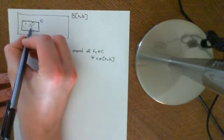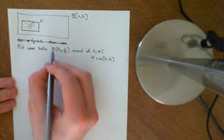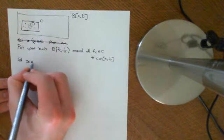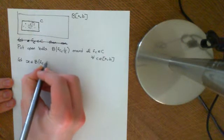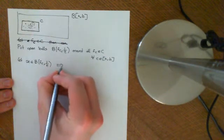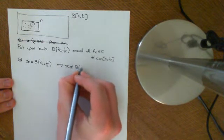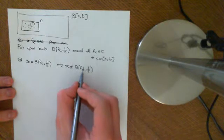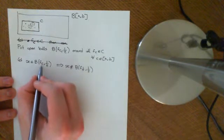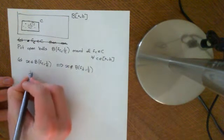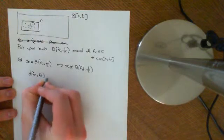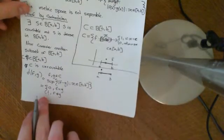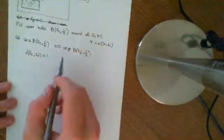If we put open balls around all of these, the first thing to note is that no point can be in more than one of these balls. Let x be an element of the ball around f_c of radius one-half — that implies x is not an element of the ball around f_d of size one-half. The reason being that if little c is different from little d, then the distance between f_c and f_d is equal to 1, because this forms a discrete metric space where distances can only take values of 0 and 1. So they're not equal to one another, so the distance is 1.